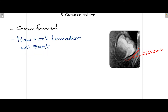At stage 6 the crown is 100% completed. You can see the whole crown has now been formed, and you can see spike-like structures that mark the beginning of root formation. Root formation will start now because the complete crown has been formed first.